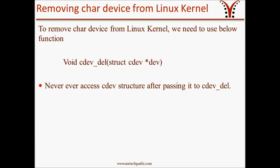We have seen how to add a cdev structure to the Linux kernel. To remove a character device from the Linux kernel, we use the cdev_del function, passing a cdev structure pointer dev — the same pointer used in the cdev_add call earlier. Note: never ever access the cdev structure after passing it to cdev_del.